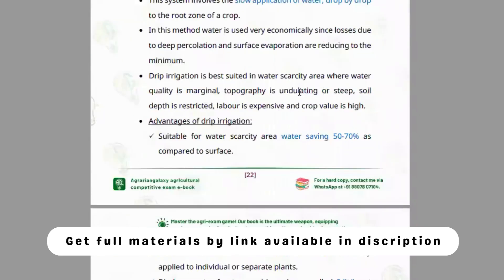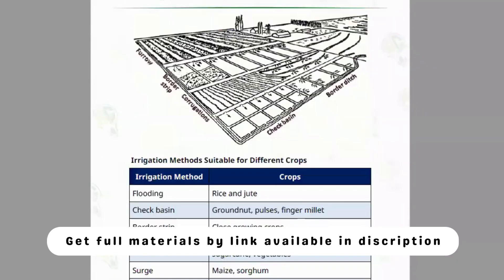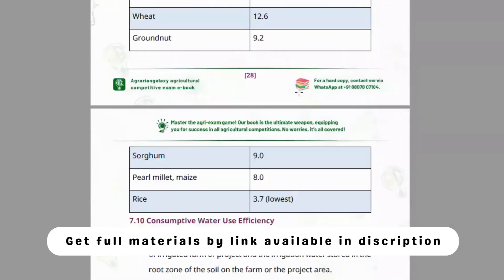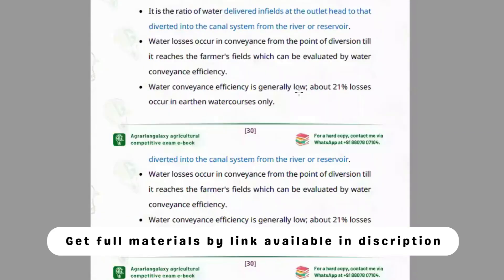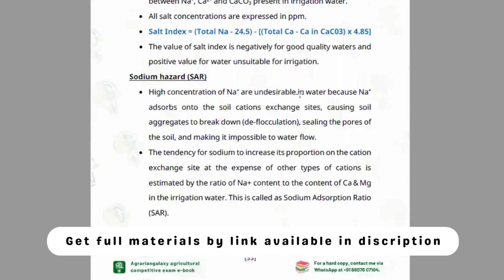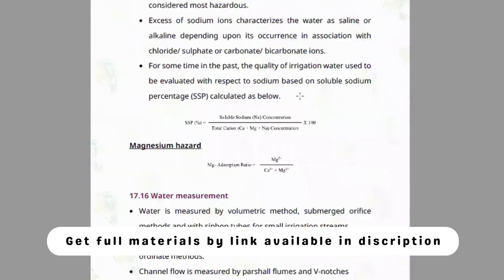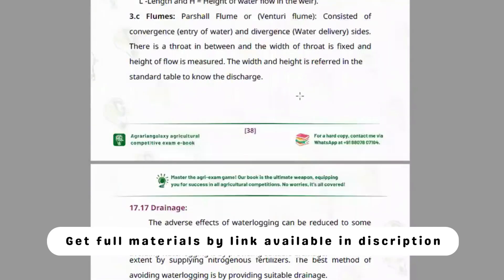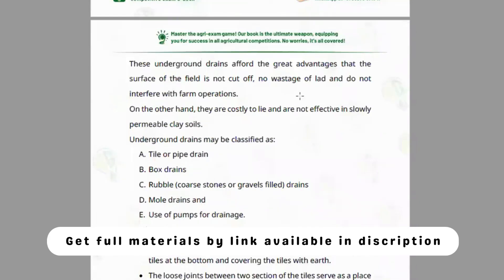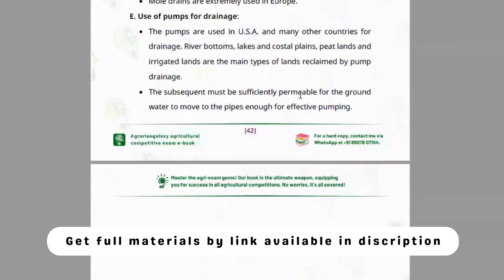Sprinkler and drip irrigation systems are covered, along with other irrigation systems and crop water requirements. Drainage is also included — types of drainage, surface drainage, trail drainage, box drainage, mole drain, and use of drainage systems, all within module six.